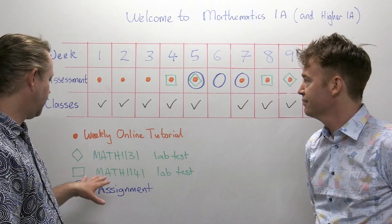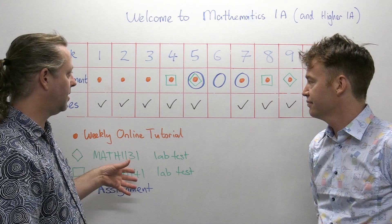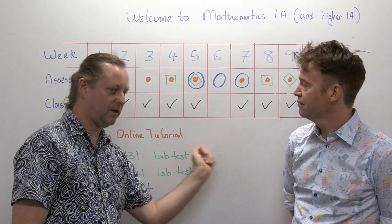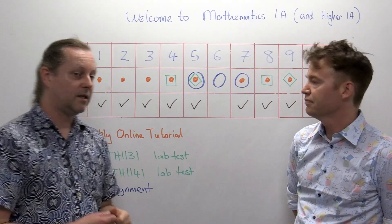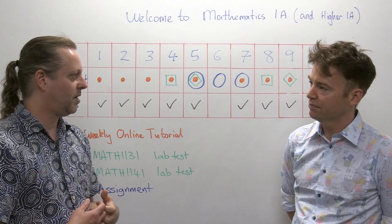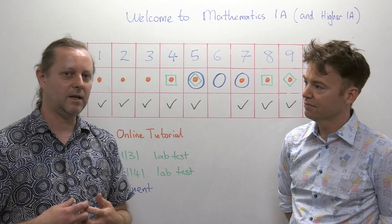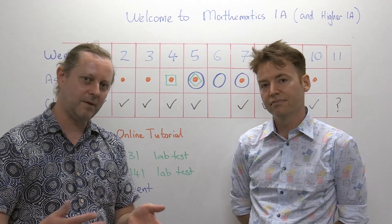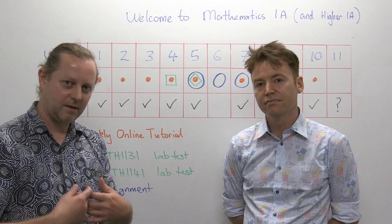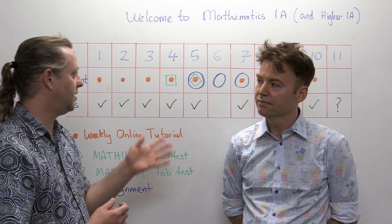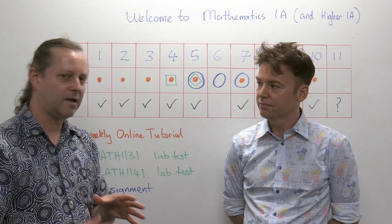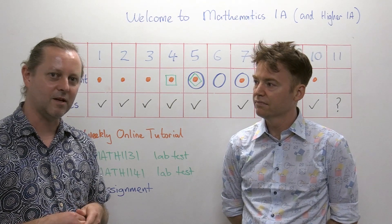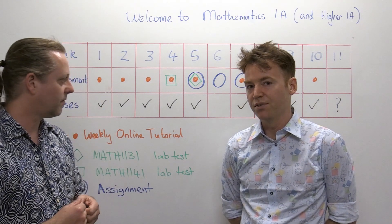There is also an assignment. We'll give it to you in week five; you can work on it during the flexibility week in week six when there are no other classes, and it's due at the end of week seven. The assignment concentrates on mathematical communication — something a bit different to what you're used to at high school. We're thinking about how you would include mathematics in a document you might provide to somebody else. The emphasis is on actually typing your mathematics into a coherent document that would be nice for somebody else to read, not just your own working.